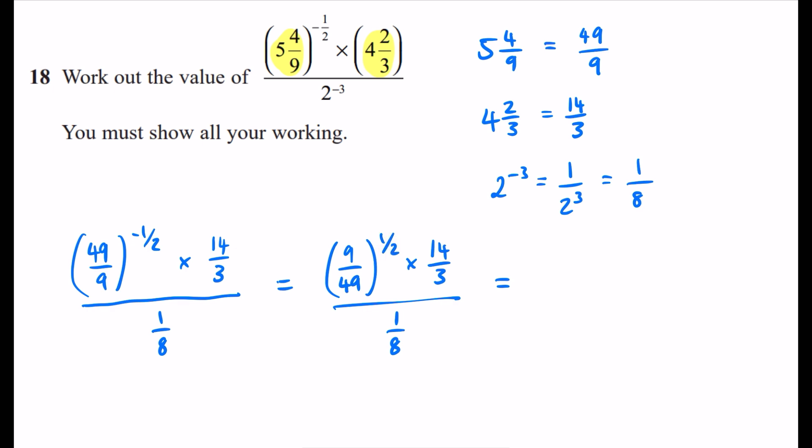Now to the power of a half, think to yourself, what does that mean? That means to take the square root. So I'll take the square root of the 9, which is the 3. I'll take the square root of the 49, which is the 7. And then I've still got my 14 over 3. And I have my 1 over 8 here.